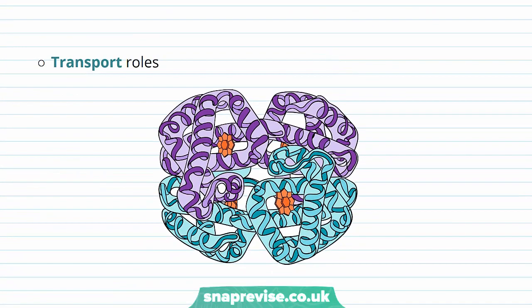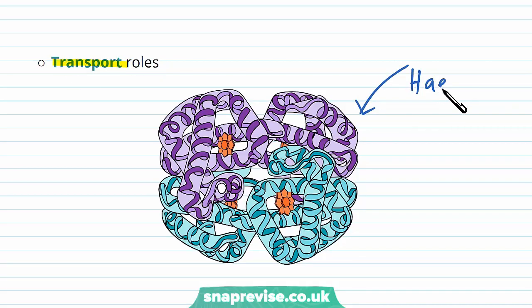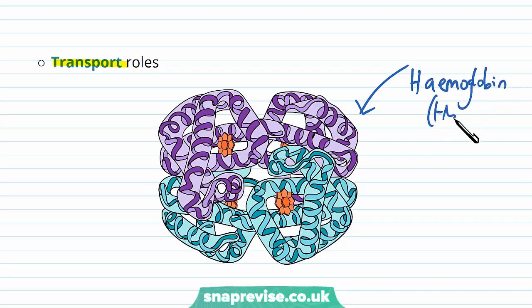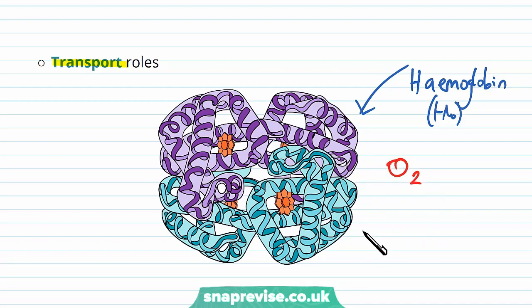Proteins also have roles in transport — transport for specific substances. For example, here is a diagram of the molecule hemoglobin. Hemoglobin, or HB, is used in transporting oxygen in the blood, and it can transport oxygen from our lungs to all of our tissues that need respiration.